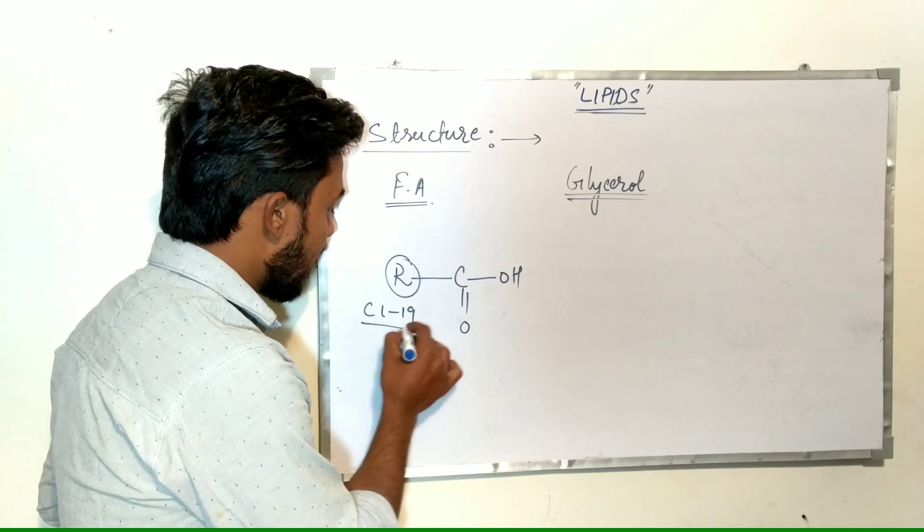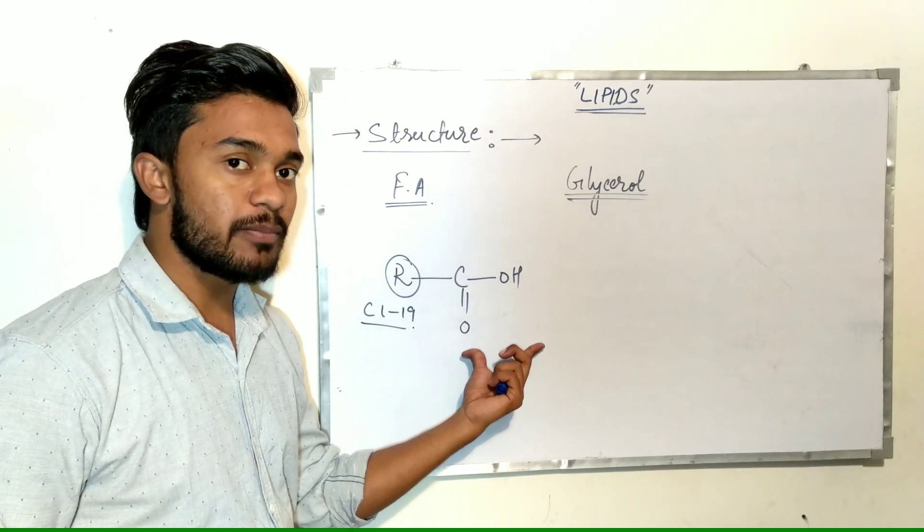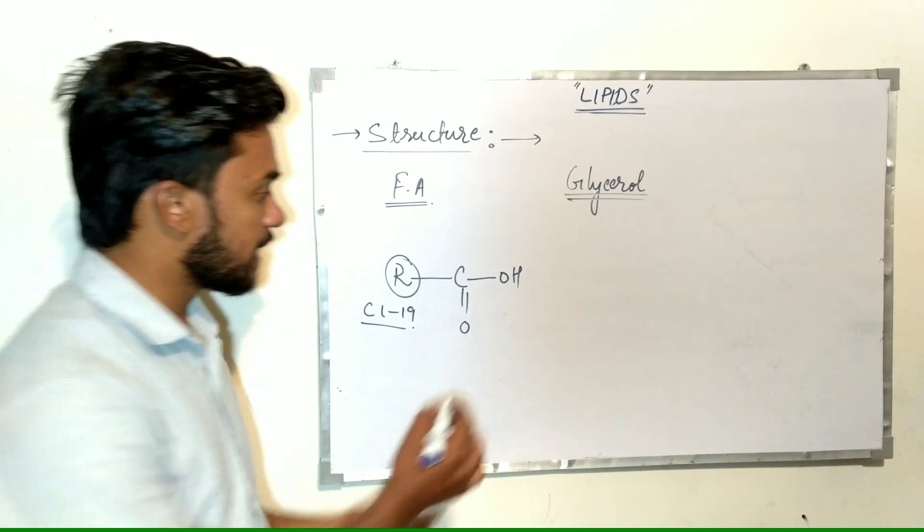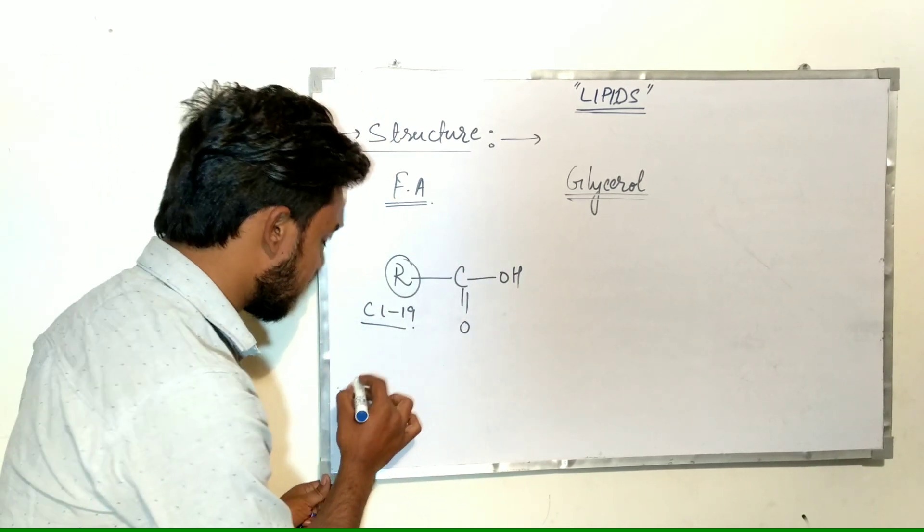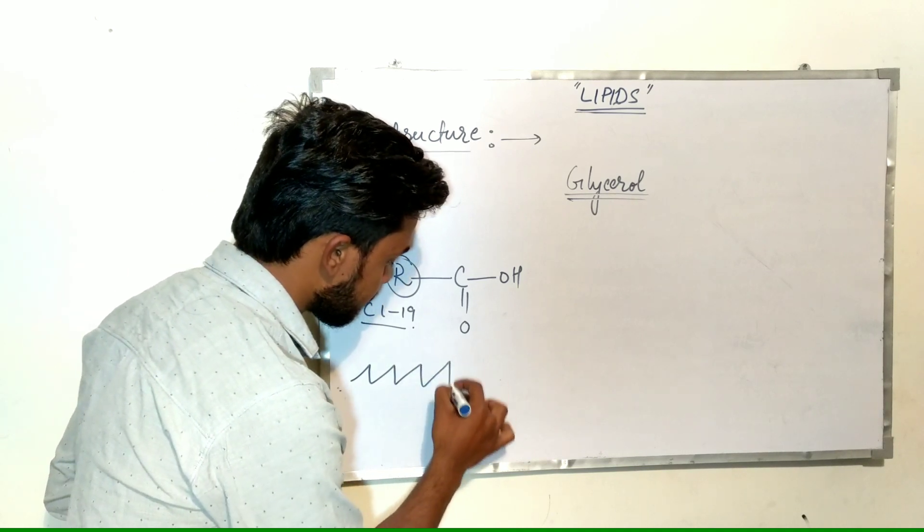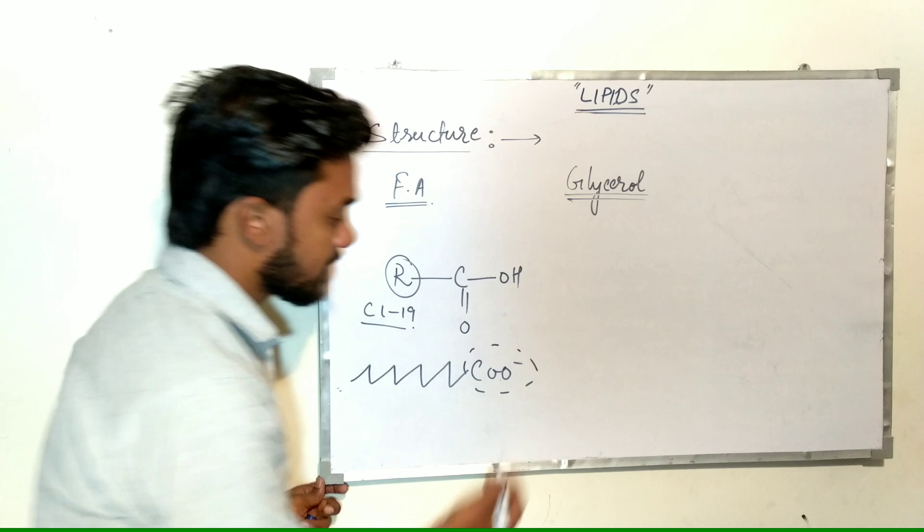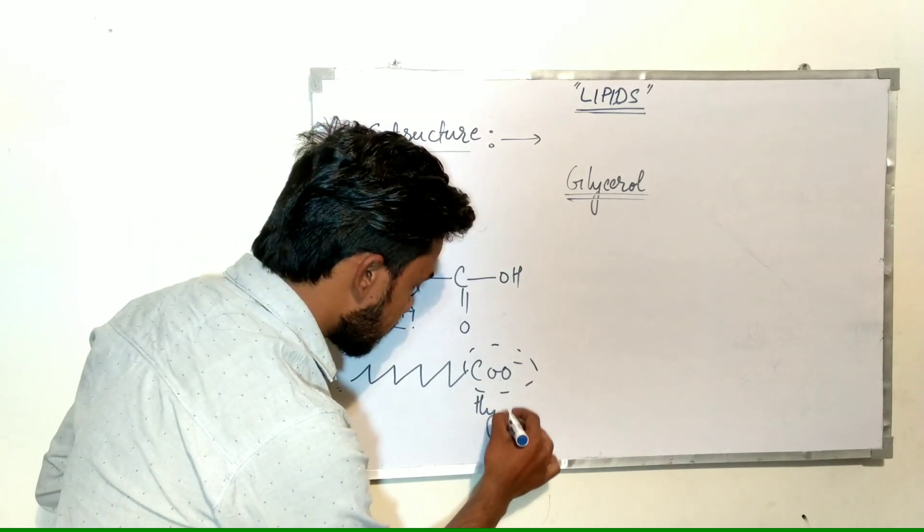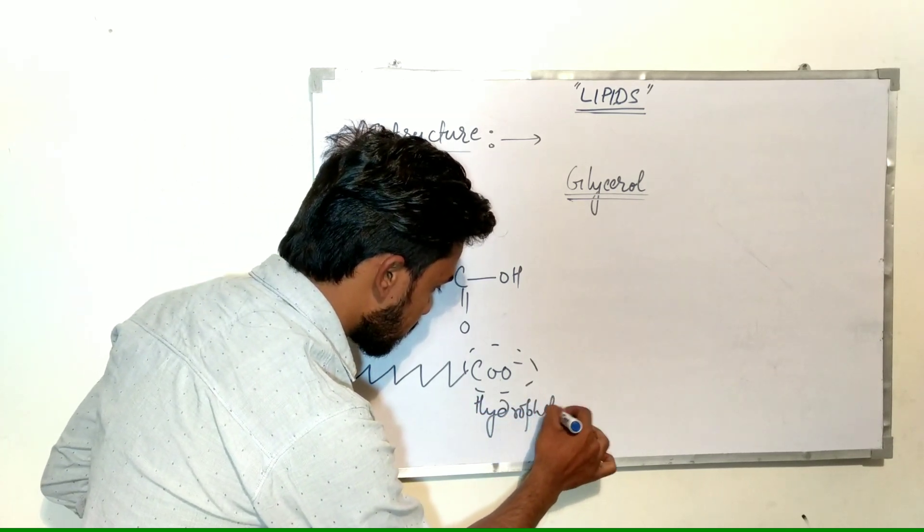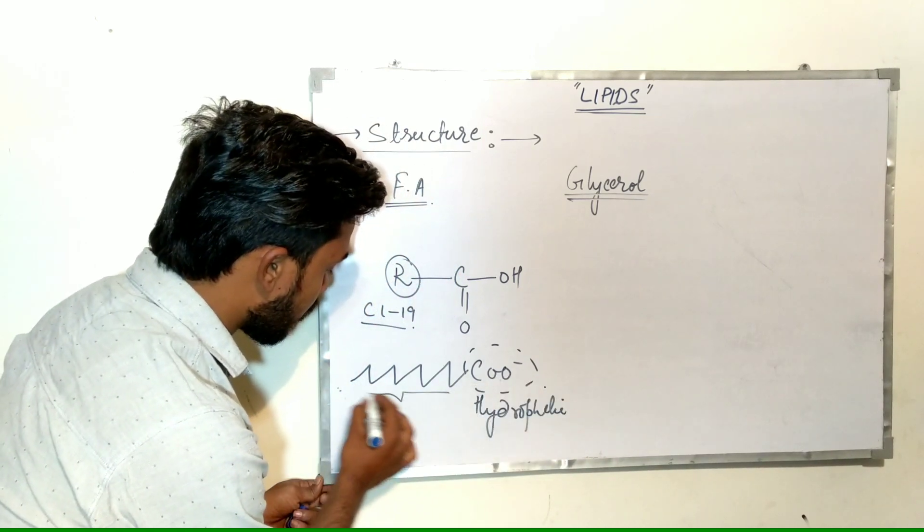At one end, it contains a polar hydrophilic group, which is the carboxylic acid group. This polar head of fatty acid is hydrophilic in nature, while the non-polar tail is hydrophobic in nature.